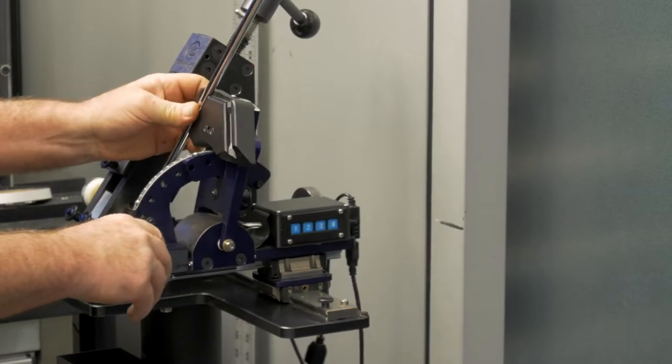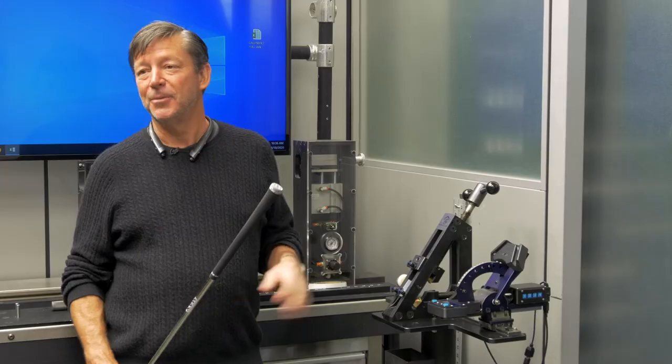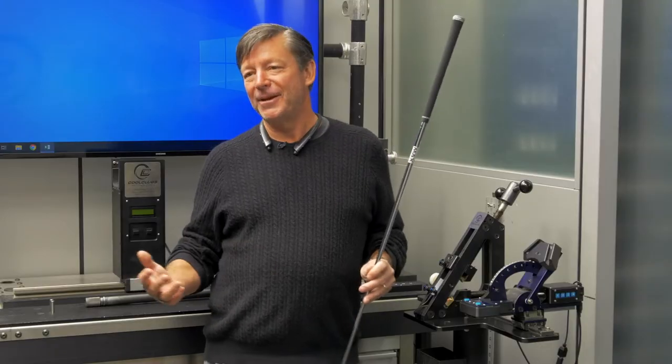So here we are in one of our fitting bays. This is another machine we make. This is a loft lie machine. Most of the tour trucks you'll see have these machines in them now. To show you how it works, because I don't use it all the time—I just design the things—we bring Stormy in to show you how to use it.